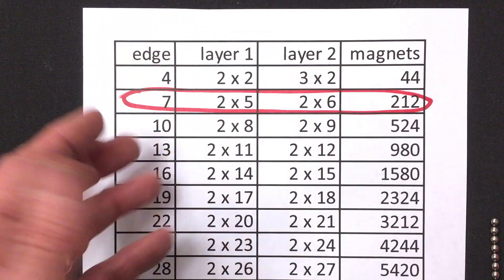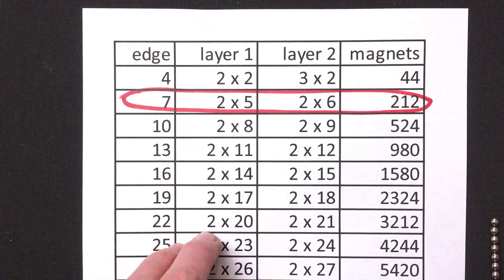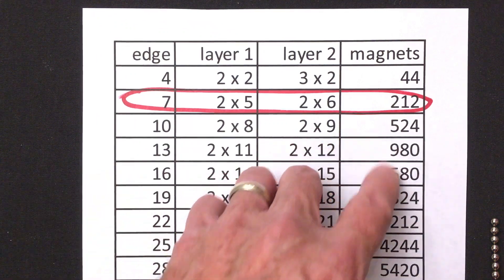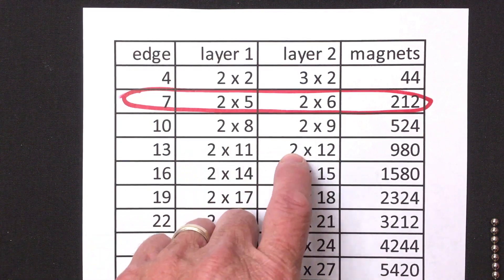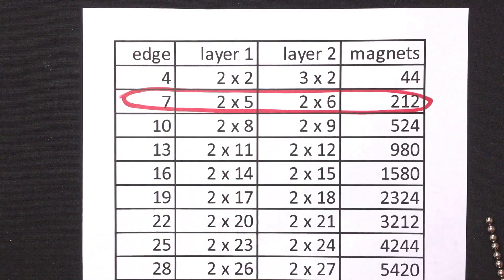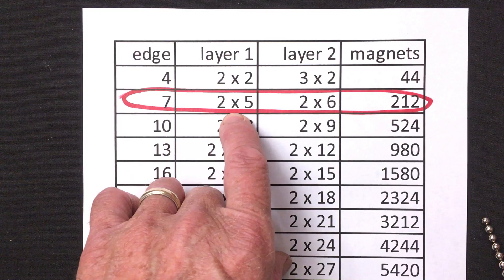Building it in other sizes is as simple as consulting with this chart to see first of all how many magnets you'll need and what the configurations of these two layers would be. Anyway we need a two by five and a two by six for layer one and layer two.